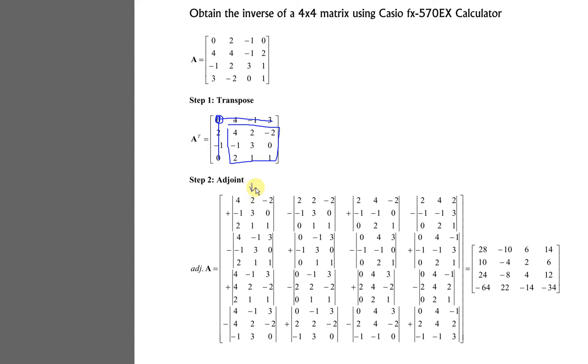What we have to remember here is the adjoint for the plus minus sign must be alternative. So we will have plus, minus, plus, minus, then plus, minus, plus, minus, plus, minus, plus, and so on.